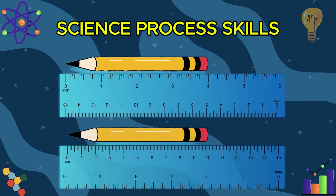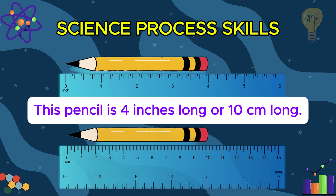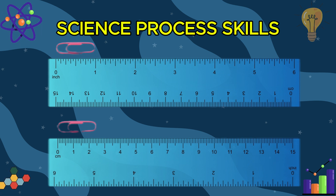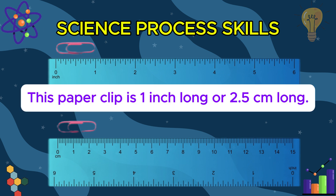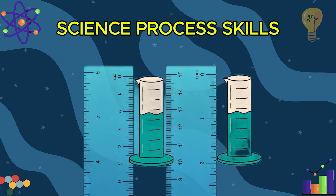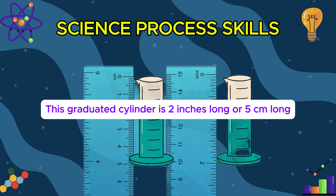So, tell me how long is this pencil? This pencil is 4 inches long, or 10 centimeters long. How long is this paper clip? This paper clip is 1 inch long, or 2.5 centimeters long. How long is this graduated cylinder? This graduated cylinder is 2 inches long, or 5 centimeters long.